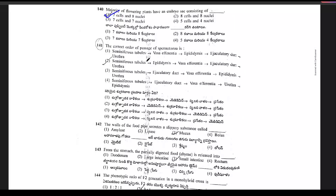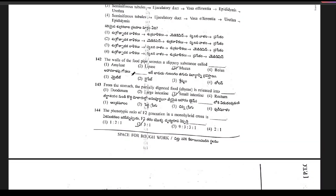Question 140: the correct order of passage of spermatozoa — option 1 is the right answer. Question 141: the walls of the food pipe secrete a slippery substance called mucus.